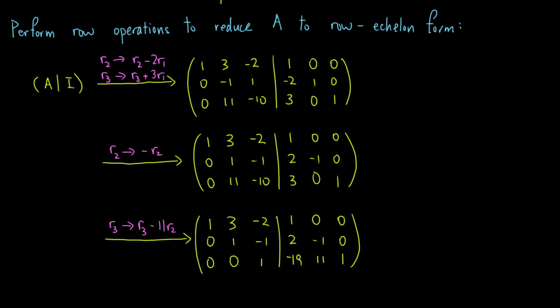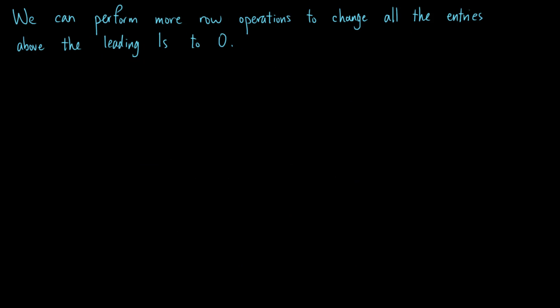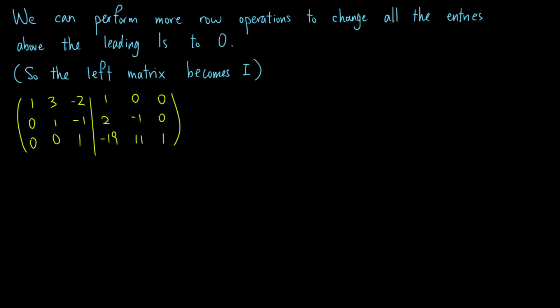Now A is in row echelon form, but we will continue to perform more row operations to change all the entries above the leading ones to 0, so that the left matrix becomes the identity matrix. We continue by making the entry above the leading one in the second row to 0, which we do by subtracting 3 times the second row from the first row.